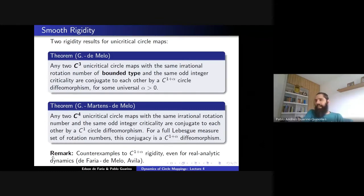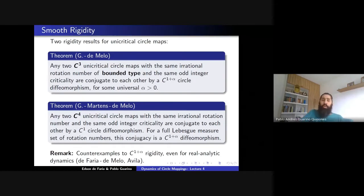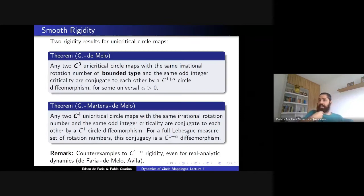For the multi-critical case, there is a result for bicritical circle maps. For real analytic bicritical circle maps with bounded combinatorics where both critical points are cubic, we do have C^{1+α} rigidity. This is a 2020 result — quite recent — involving papers by Yampolsky, then Yampolsky with Gabriel Estevez and Daniel Guzman, and a paper by Estevez and myself.